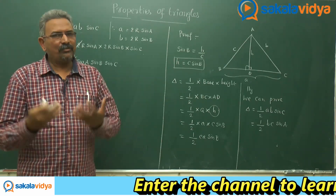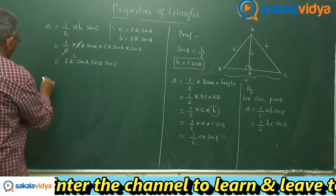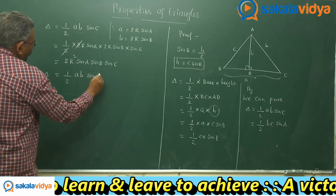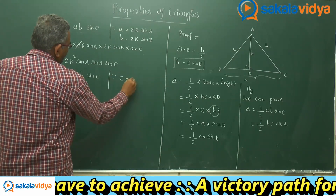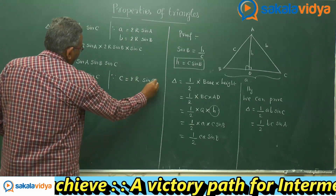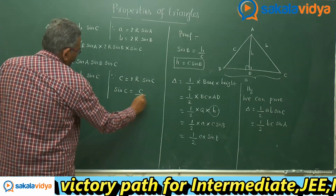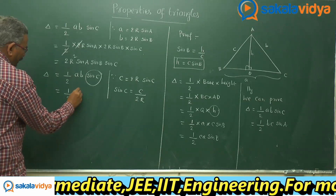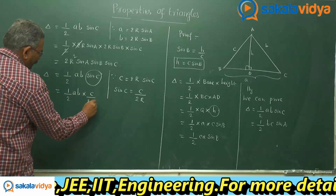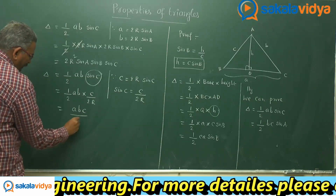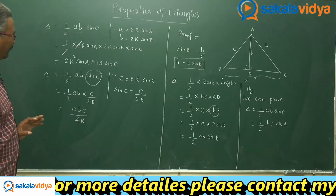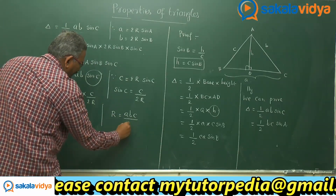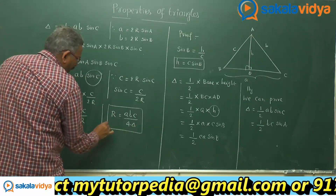Let us deduce one more formula for delta. Consider delta = ½ab·sin C. From the sine rule, c = 2R·sin C, so sin C = c / 2R. Replacing sin C: delta = ½ab × (c / 2R) = abc / 4R. Therefore, delta = abc / 4R. This gives us an interesting formula: R = abc / 4delta. The circumradius R can be calculated using this formula.